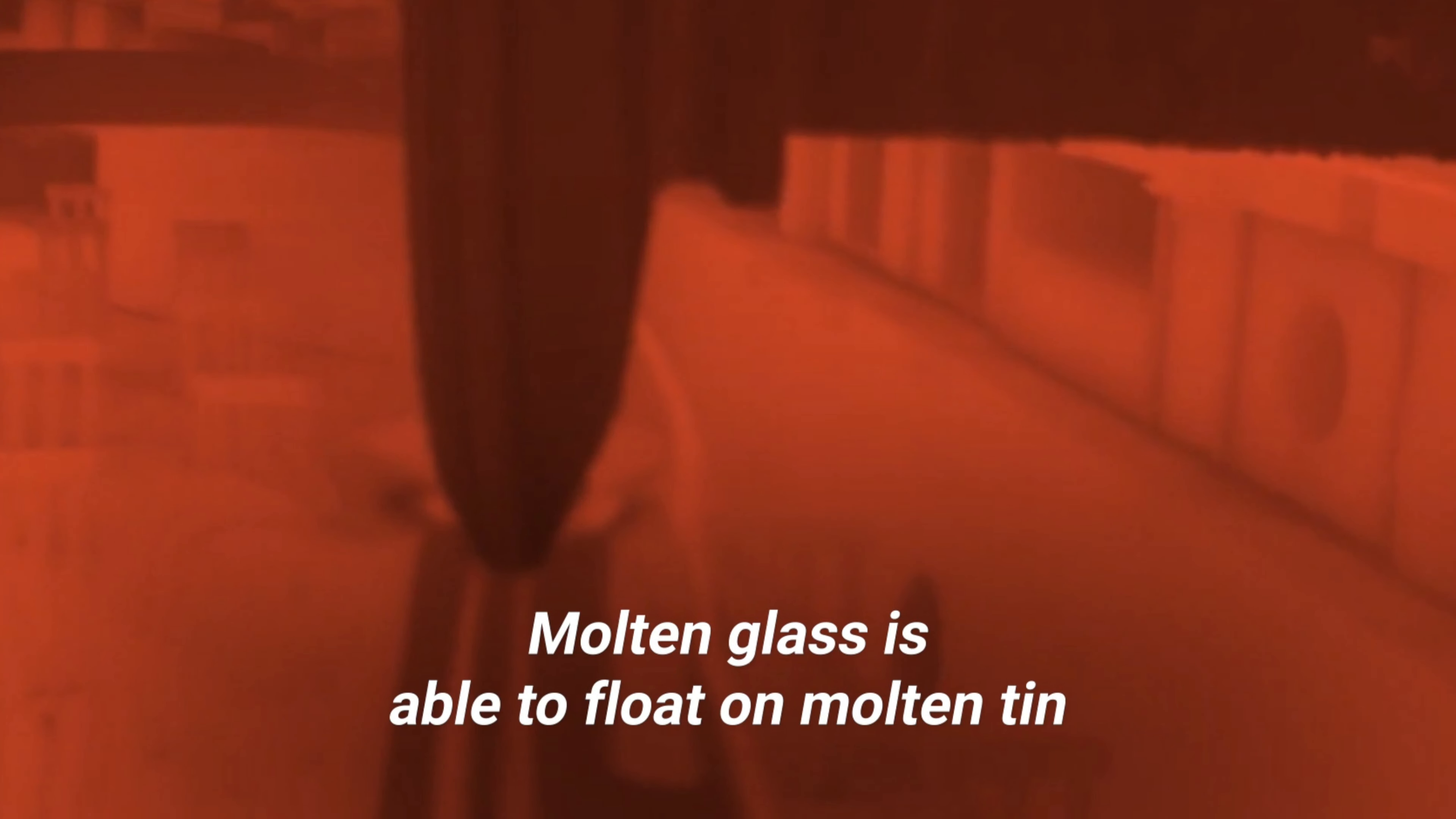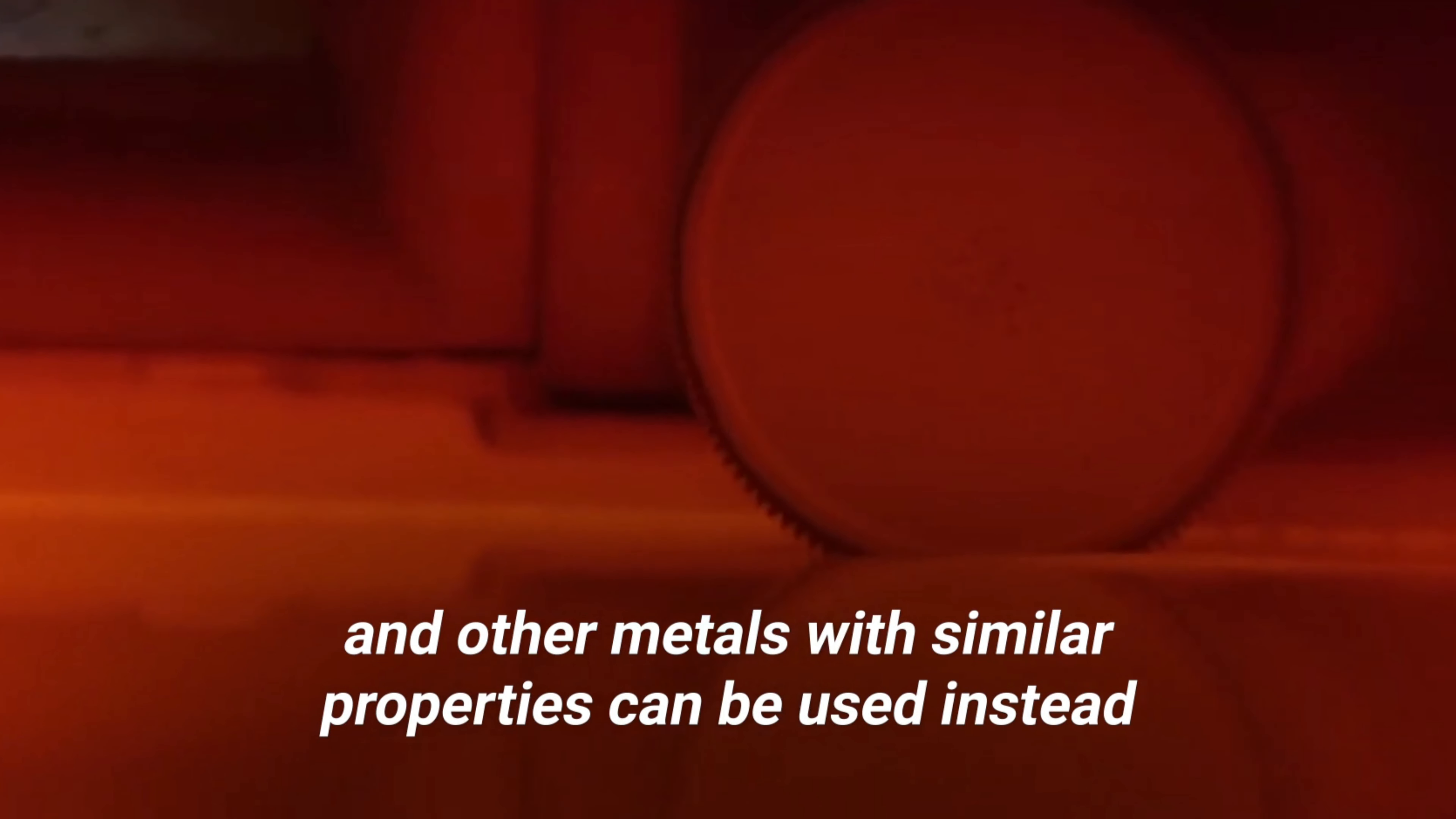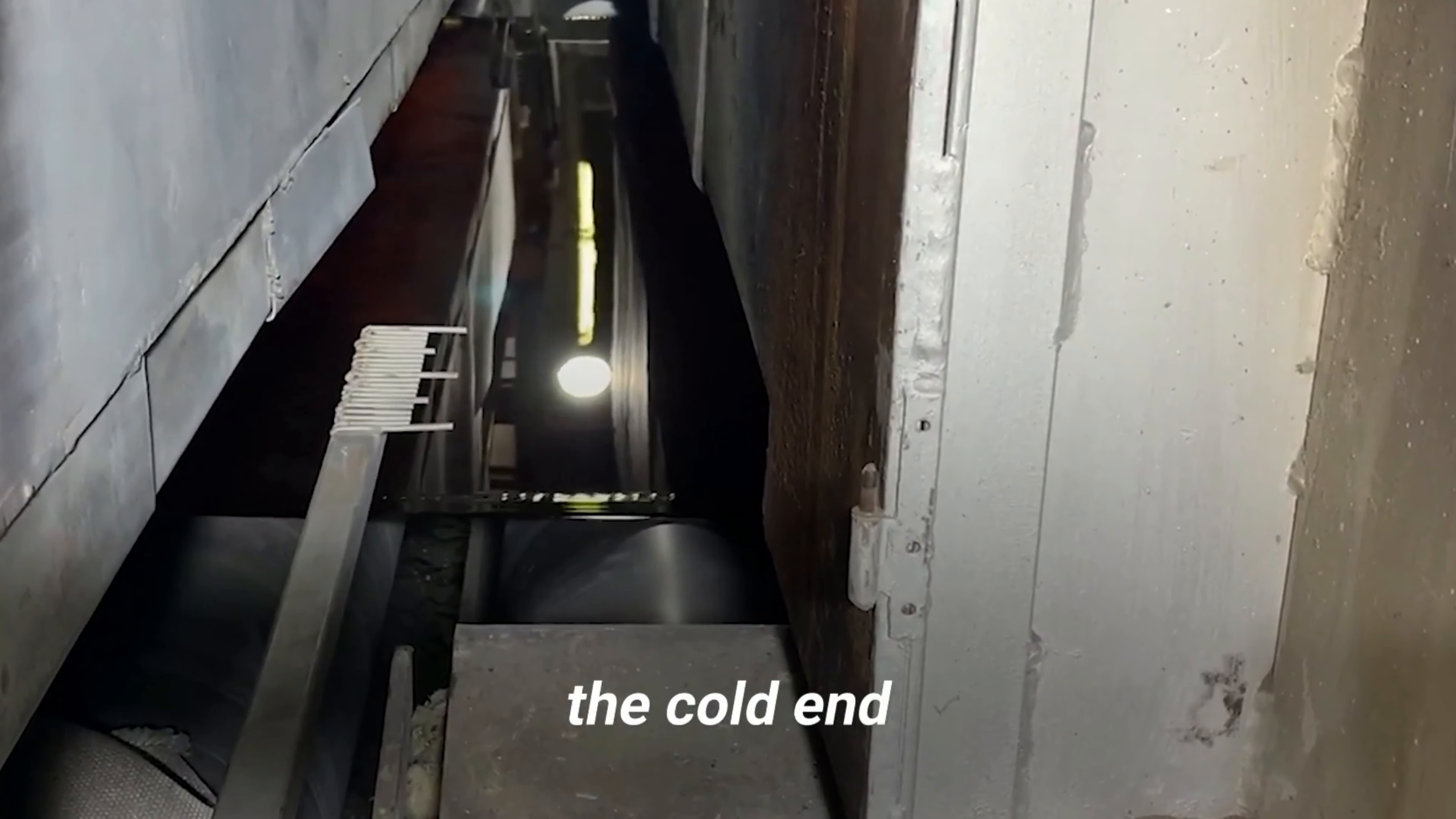Molten glass is able to float on molten tin due to the high density of the tin, and other metals with similar properties can be used instead. Once the glass cools down and sets, it's ready for the next stage of the process, the cold end.